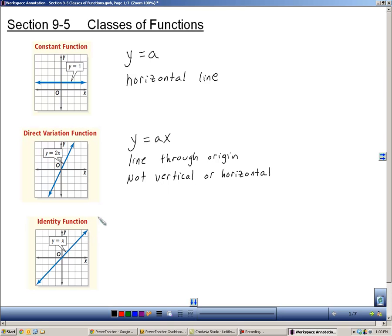The next one is the identity function. The equation is y equals x. Now this is nothing more than a special direct variation except the a value is a one. And the interesting thing about this one is all of the points are (a, a). So you have a point that's (1, 1), (2, 2), (-3, -3). All of the points on the identity function have the same value for the x and y.